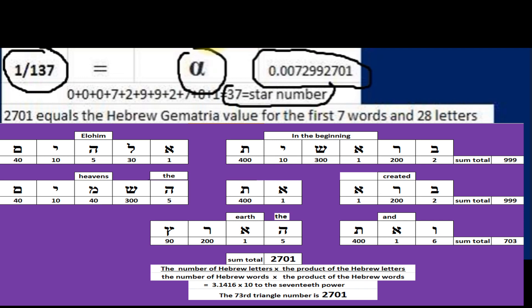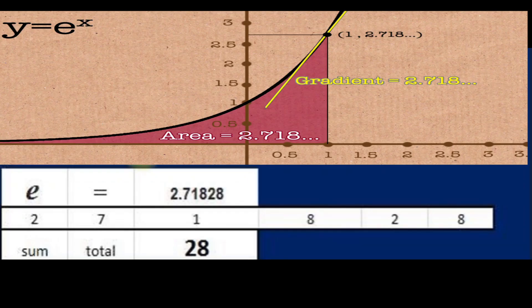2701 equals the Hebrew gematria sum total letter value of Genesis 1:1. And the e natural logarithm, the e constant, 2.71828 sum total.